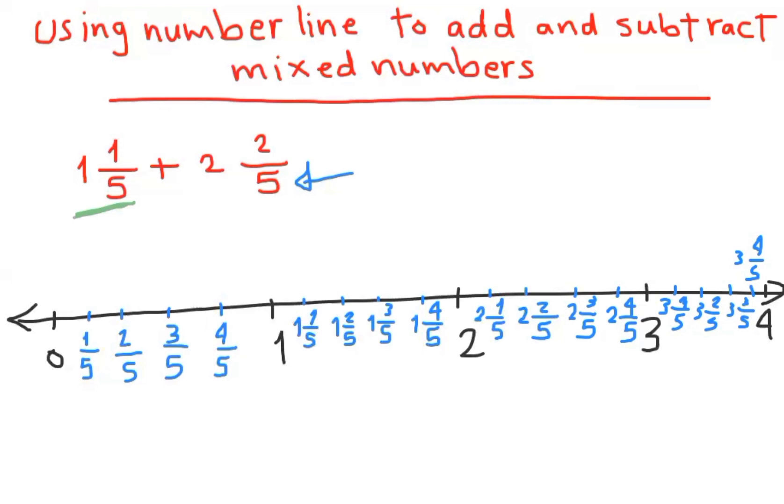I'm going to rename the second number and change it to an improper fraction. Two multiply by five is ten. Ten plus two is twelve, so twelve out of five. Start with the first number, one and one out of five.